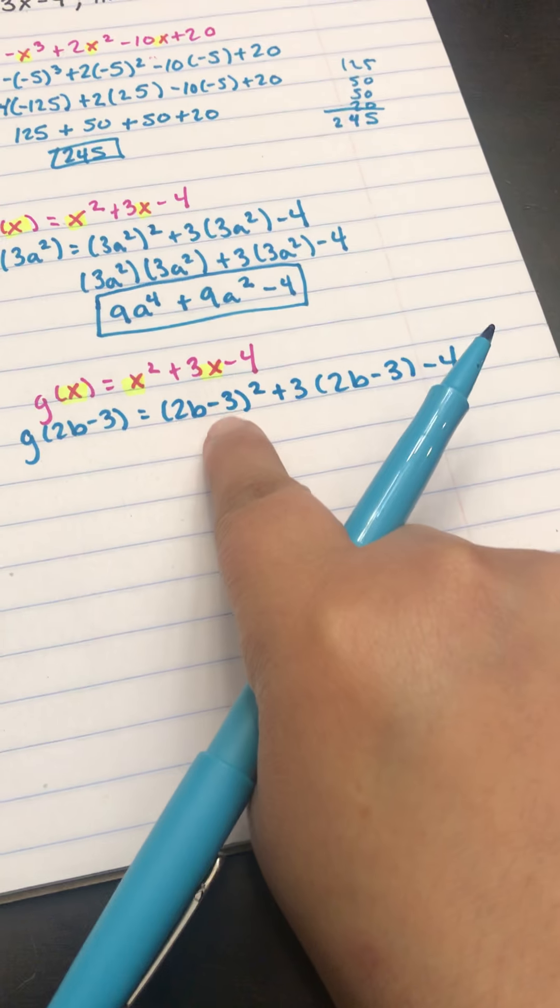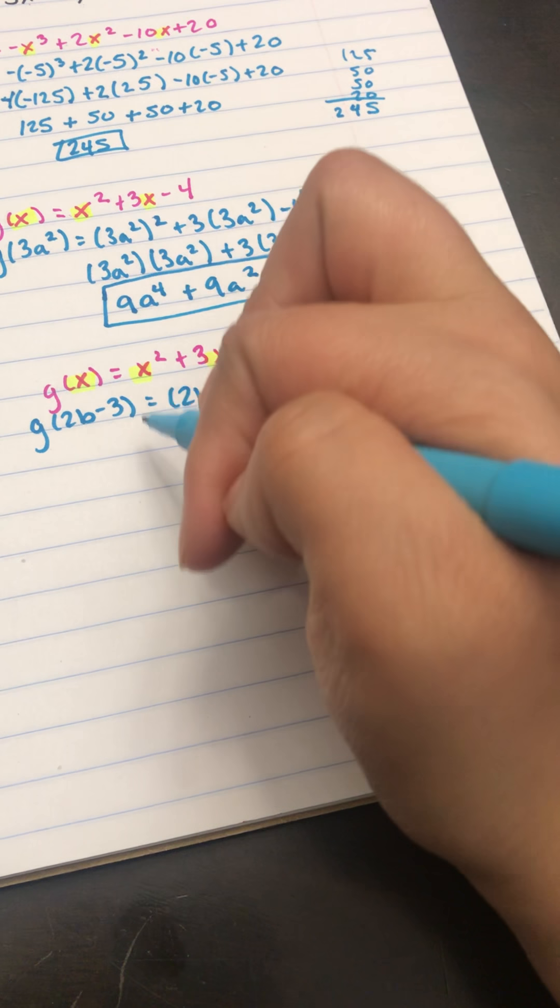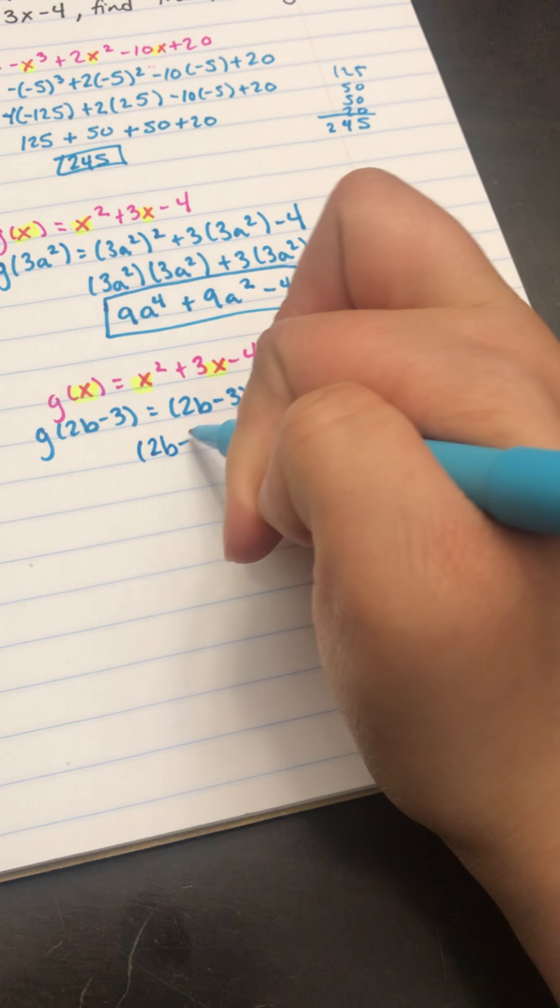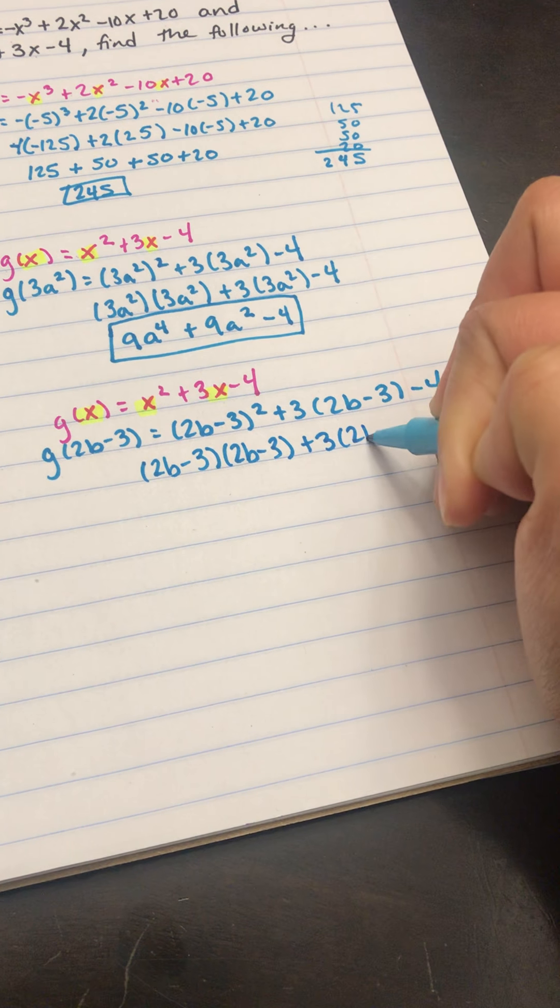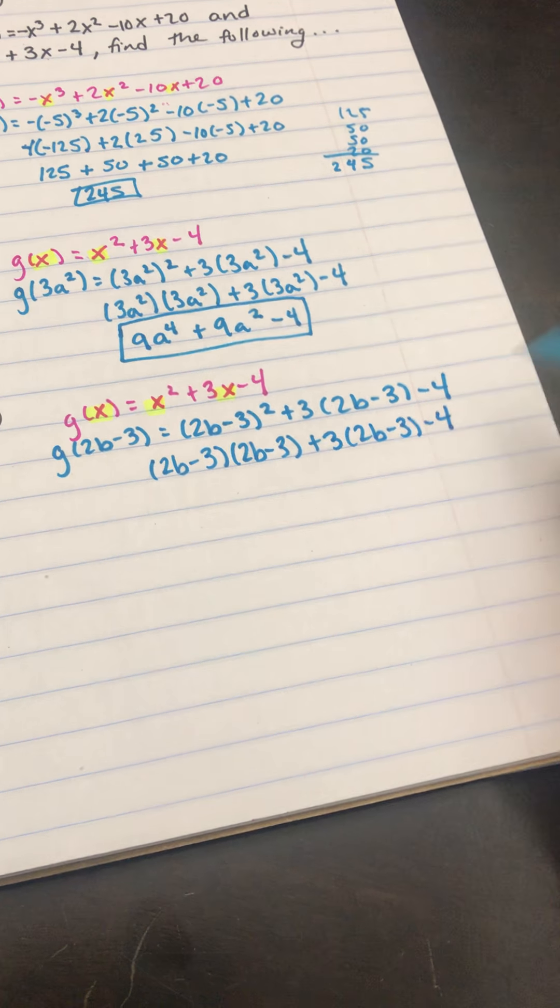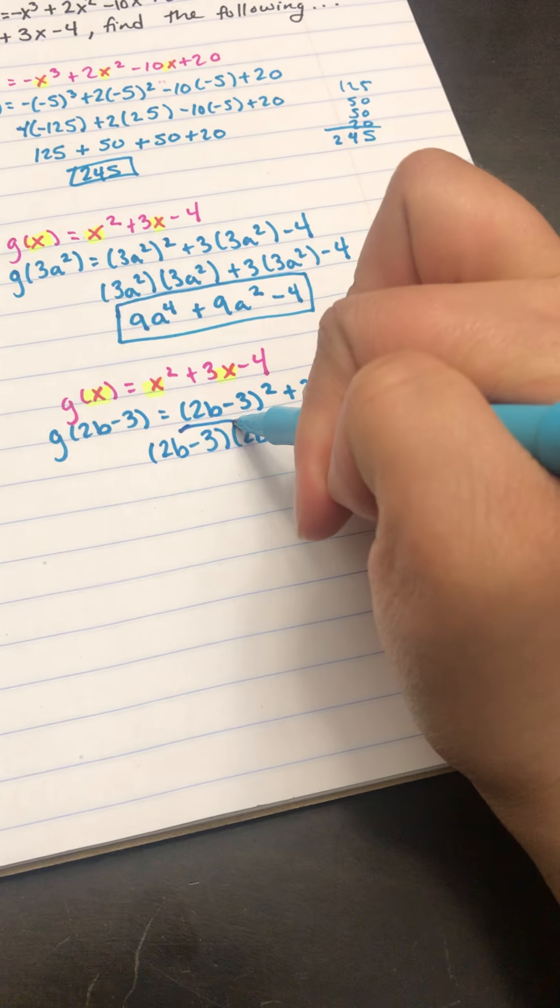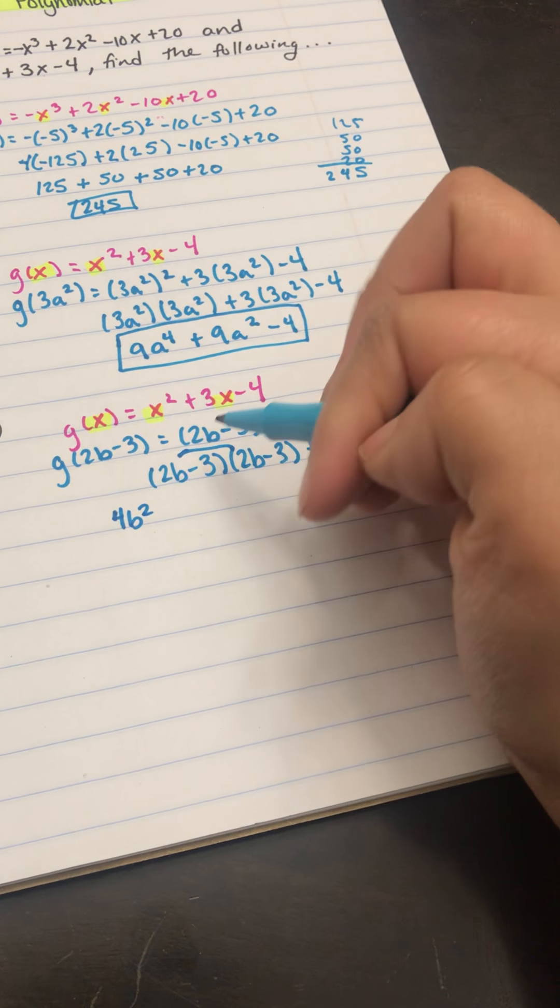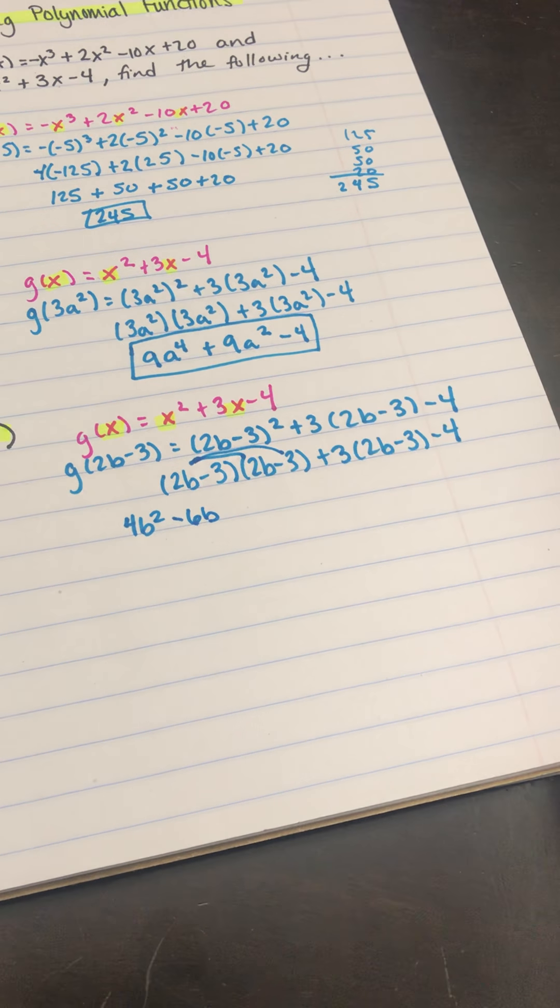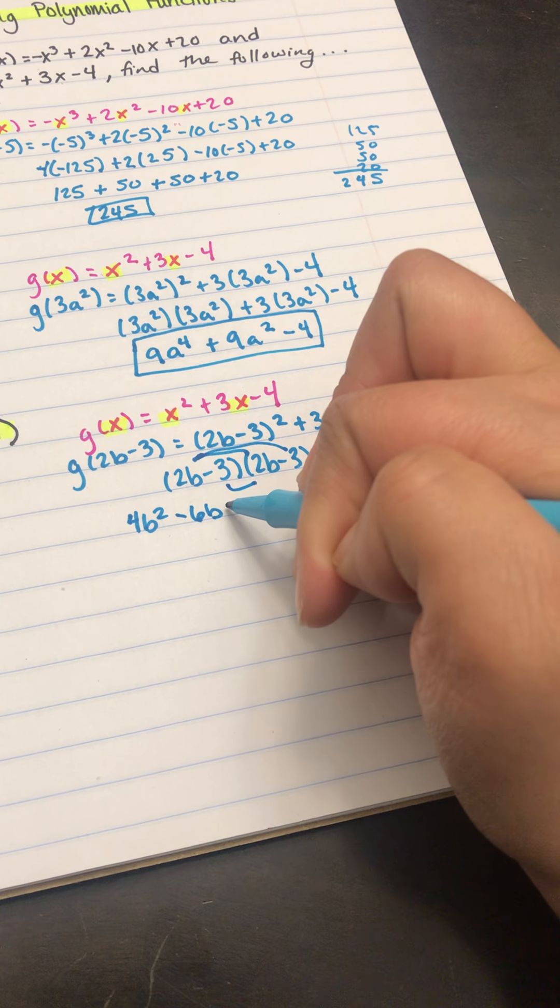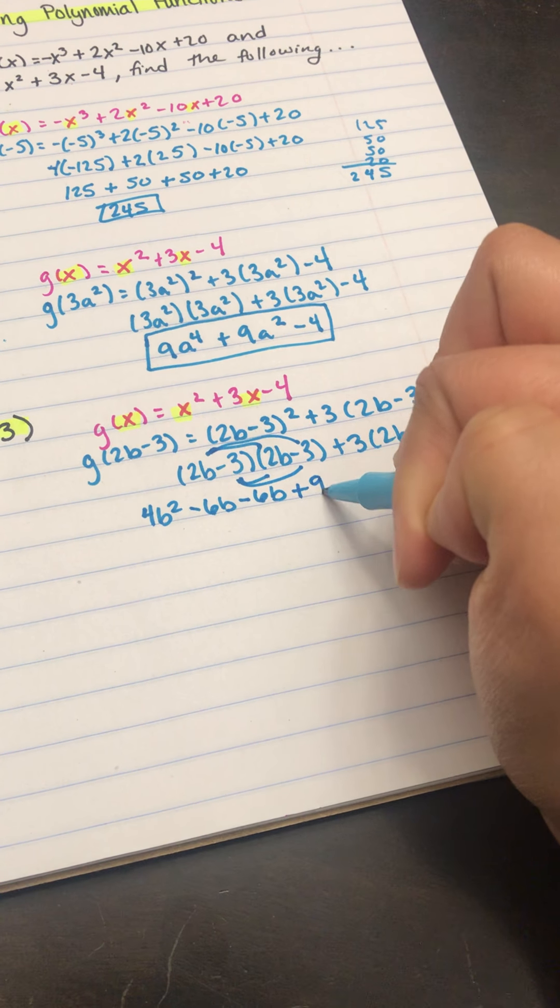Here, for 2b minus 3 squared, you cannot just distribute that 2 because of this minus. So we actually have to do it times itself: 2b minus 3 times 2b minus 3. So I just expanded that problem, and now I can do the multiplication. 2b times 2b is 4b squared. 2b times negative 3 is negative 6b. Negative 3 times 2b is negative 6b. And negative 3 times negative 3 is positive 9.